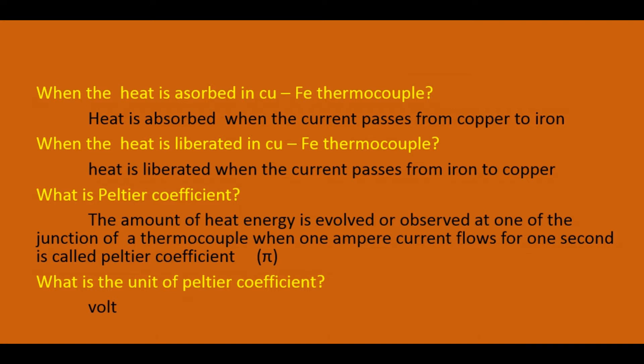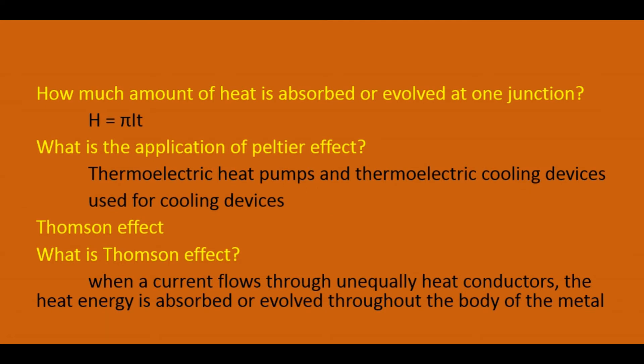What is the Peltier coefficient? The amount of heat energy absorbed or evolved at one junction of a thermocouple when one ampere current flows for one second is called the Peltier coefficient. It is denoted by the letter pi (π). The unit of the Peltier coefficient is volt. The amount of heat is given by: H = π × I × t, where π is the Peltier coefficient, I is the current, and t is the time.